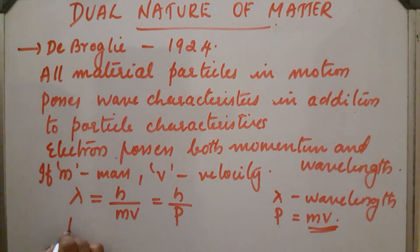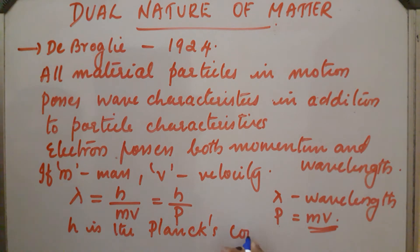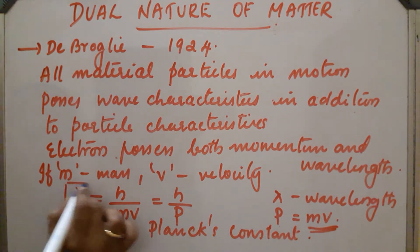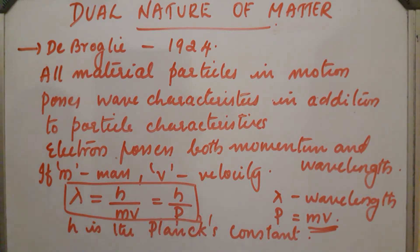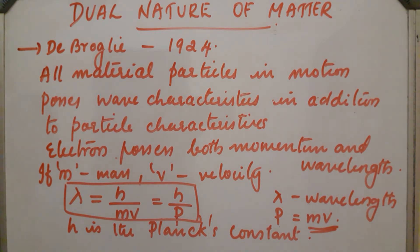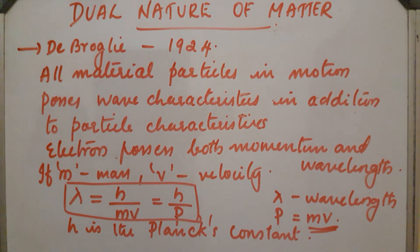Here h is Planck's constant. This is the relation between lambda and momentum. Now this relation is significant only in the case of microscopic particles. For macroscopic particles, the mass is very high, so momentum mv will be high, making lambda too small, and the relation becomes insignificant. So this is applicable only in the case of microscopic particles.